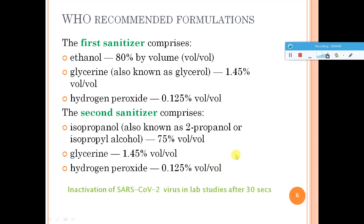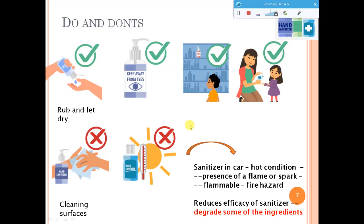Coming to some do's and don'ts while using a sanitizer: you should use only a few drops and once you rub it on your hands, you must let it dry — that is the most important thing. There have been accidental cases where people applied sanitizer, didn't wait for it to dry, and started cooking, leading to burns on their hands. Ensure the sanitizer is fully dry before resuming any work.